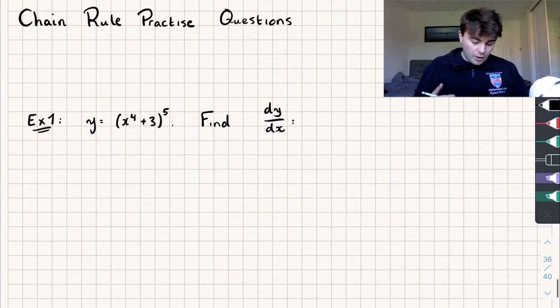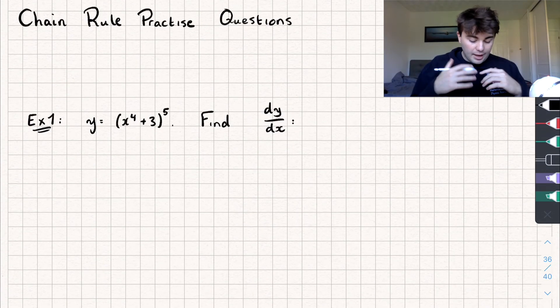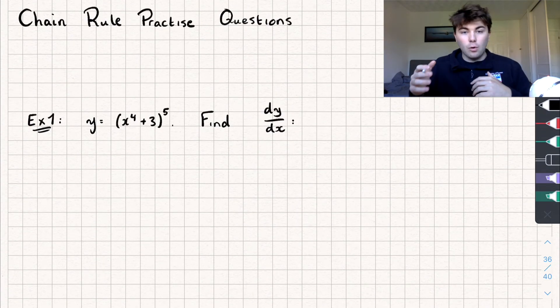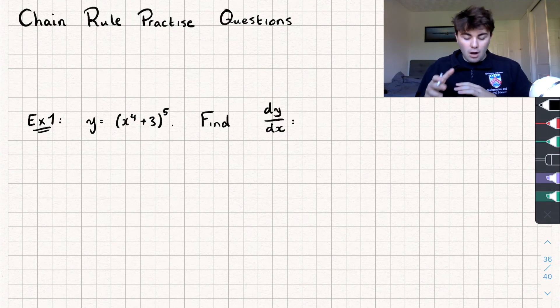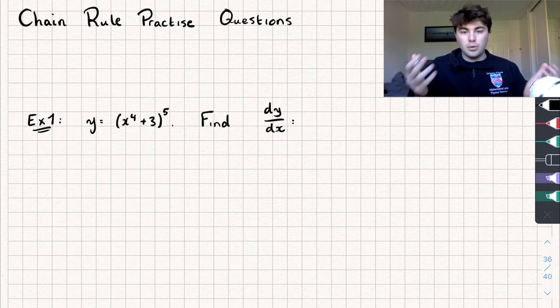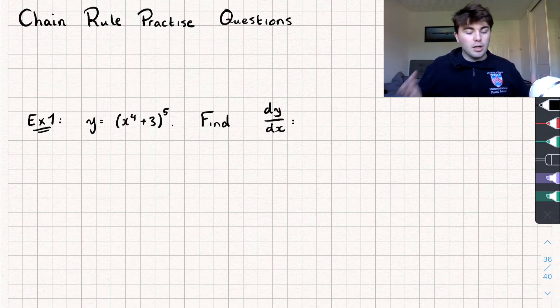So let's start off with the first question where we have y equaling x to the power of 4 plus 3, all to the power of 5, and obviously we want to find dy by dx and we're going to be using the chain rule.